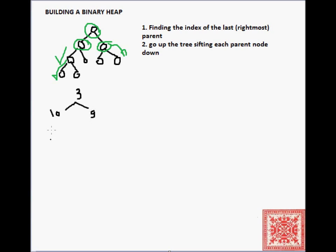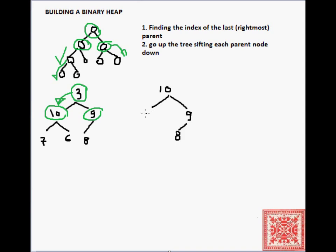Here's an example: we have the array [3, 10, 9, 7, 6, 8] and we want to turn it into a maximum heap. The rightmost non-leaf node is 9, and the max heap property is already satisfied there. The next non-leaf node to the left is 10 — also satisfied. Then we get to the root, 3, where the max heap property is not satisfied, so we swap it with its maximum child, which is 10. After the swap, we must recurse on the newly swapped position — the max heap property is not satisfied there either, so 3 is swapped with its maximum child, 7. The result is [10, 7, 9, 3, 6, 8], which is a valid maximum heap.